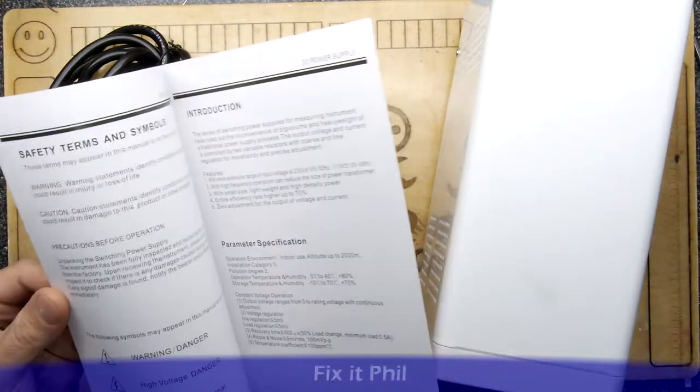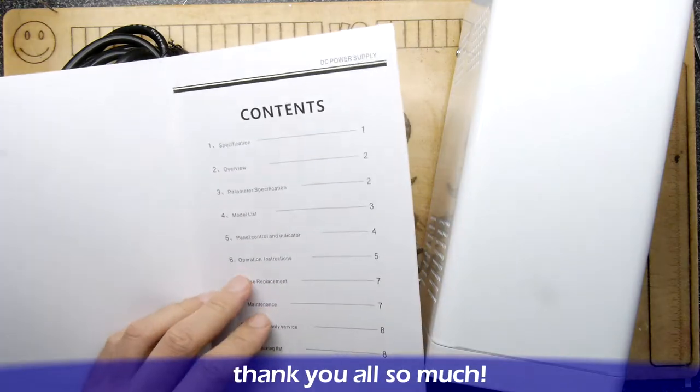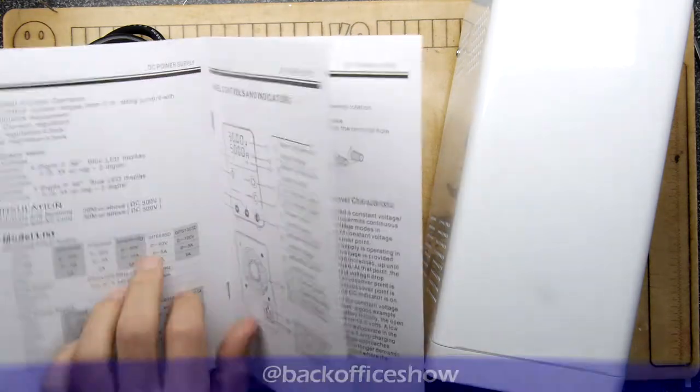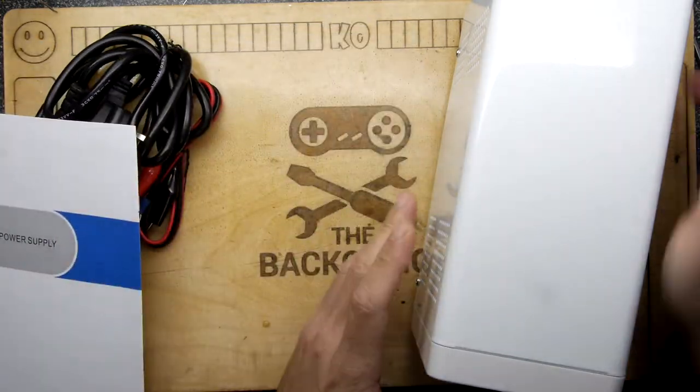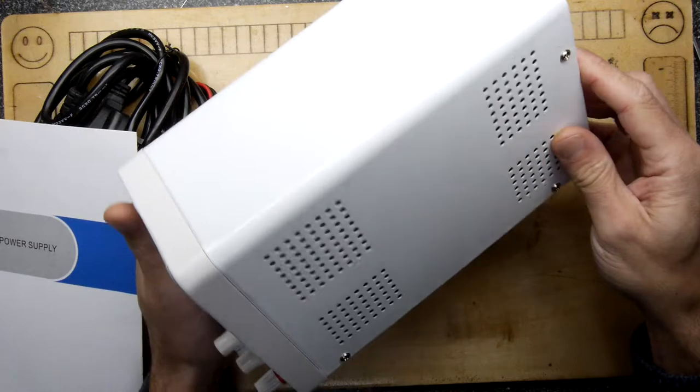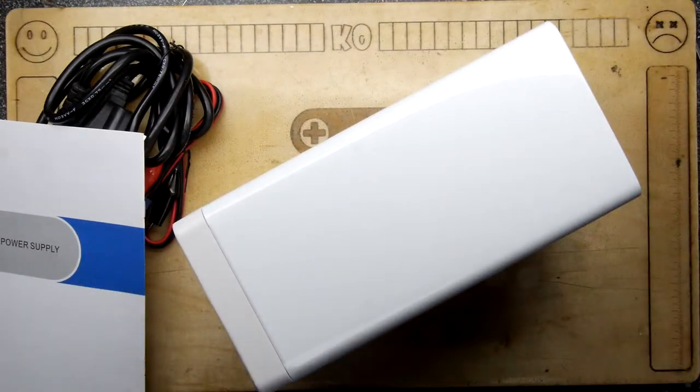There are some instructions here. I do believe there's a calibration for the over current where you short it and you turn the over current. We'll play with that in a minute. But I'm more curious about looking inside this just because it's so light.